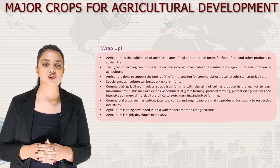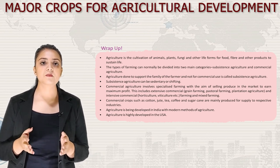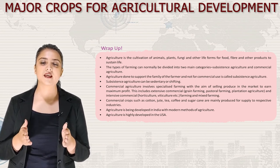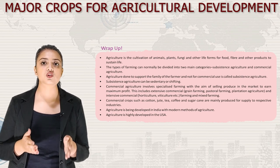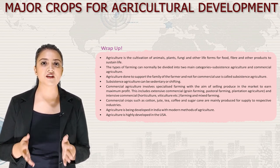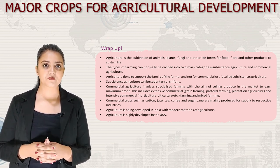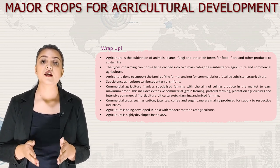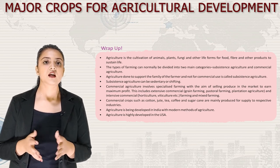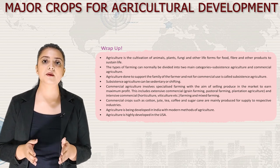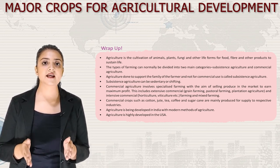Let's wrap up the session. Agriculture is the cultivation of animals, plants, fungi and other life forms for food and other products to sustain life. Farming is divided into two main categories: subsistence agriculture and commercial agriculture. Subsistence agriculture can be sedentary or shifting. Commercial agriculture involves specialized farming to sell produce and earn profit, including extensive grain farming, pastoral farming, plantation agriculture, and intensive commercial farming such as horticulture and viticulture. Commercial crops like cotton, jute, tea, coffee and sugarcane are produced for respective industries. Agriculture is being developed in India with modern methods, and is highly developed in the USA.